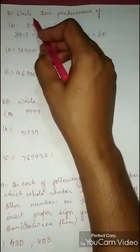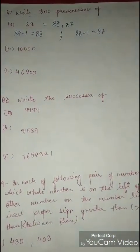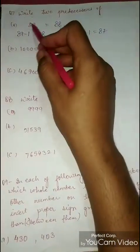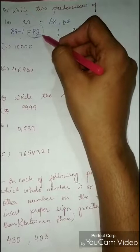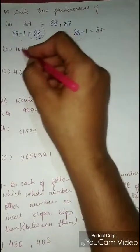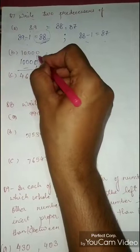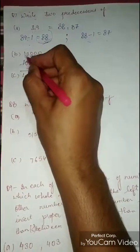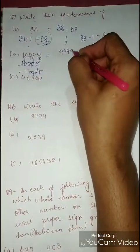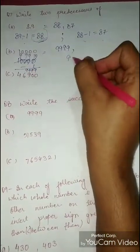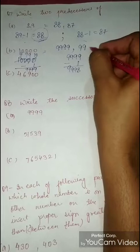For the next number, 10000: to find the predecessor, subtract 1. So the first predecessor is 9999. Then subtract 1 again to get 9998. So the two predecessors are 9999 and 9998.